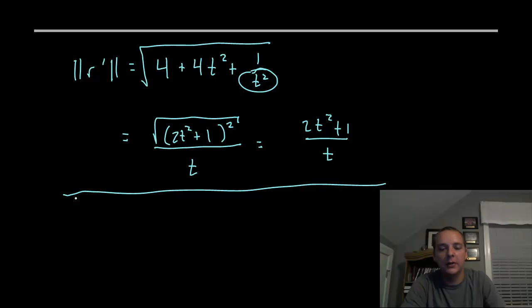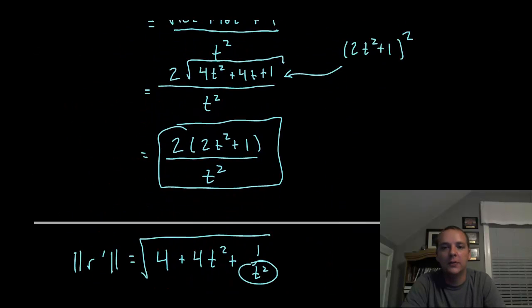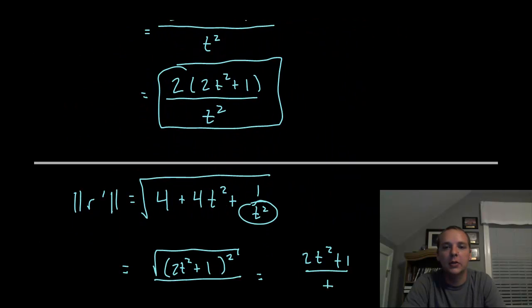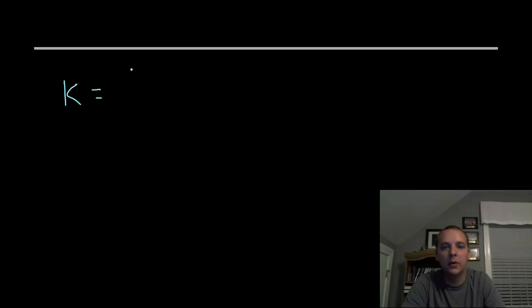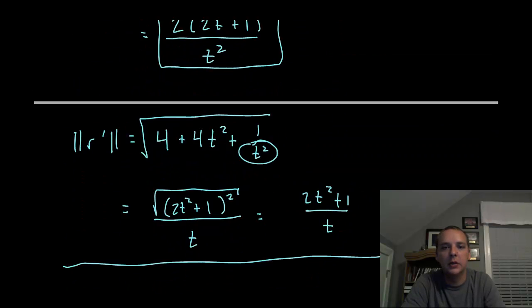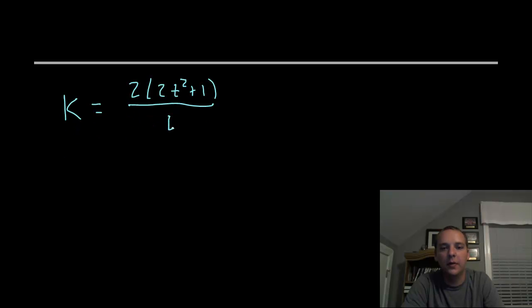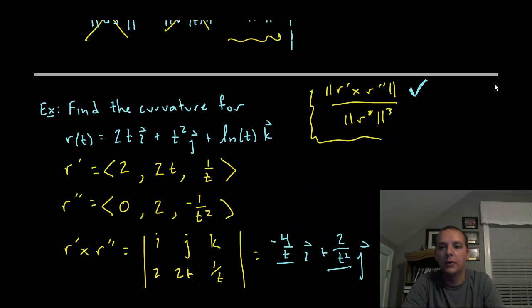So I'm ready for my final answer now. The curvature k will be this first answer I had in a box, 2 times the quantity 2t squared plus 1 all divided by t squared, divided by norm of r prime cubed.